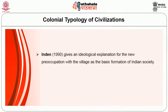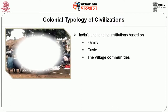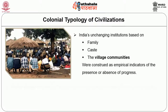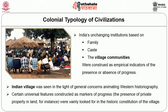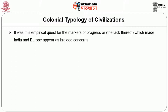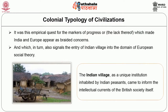Indian gives an ideological explanation for the new preoccupation with the village as a basic formation of Indian society. He argues that the Orientalist perspective of the 19th century placed European modernity in a hierarchical relationship with Asiatic tradition. India's unchanging institutions based on family, caste, and village communities were constructed as empirical indicators of progress. Indian villages were seen in the light of general consensus animating western historiography, and the Indian village as a unique institution inhabited by peasants came to inform the intellectual currents of British society itself.